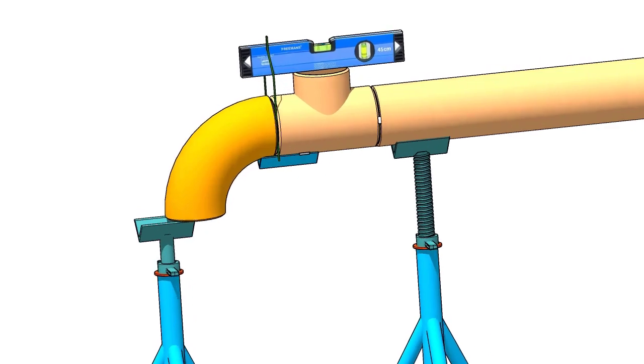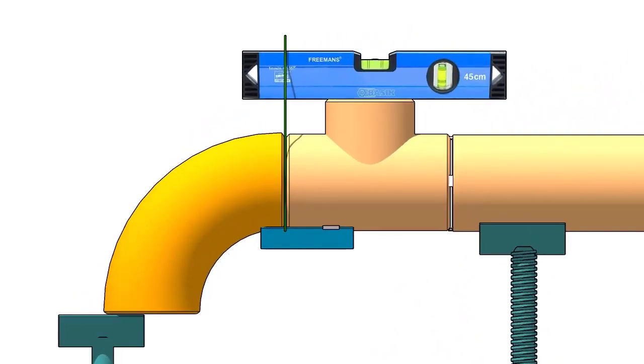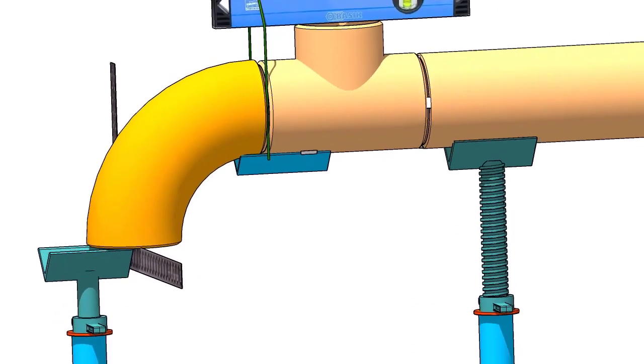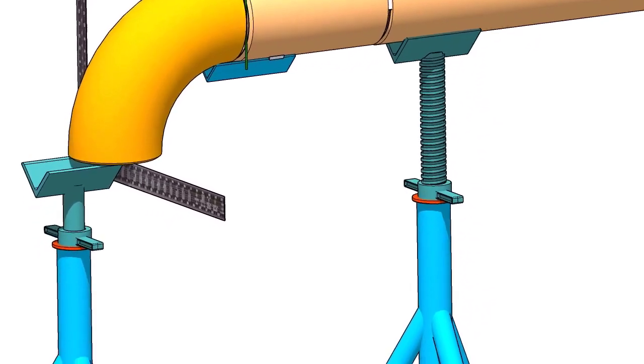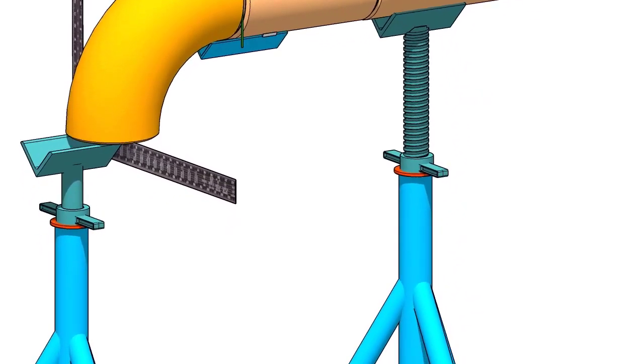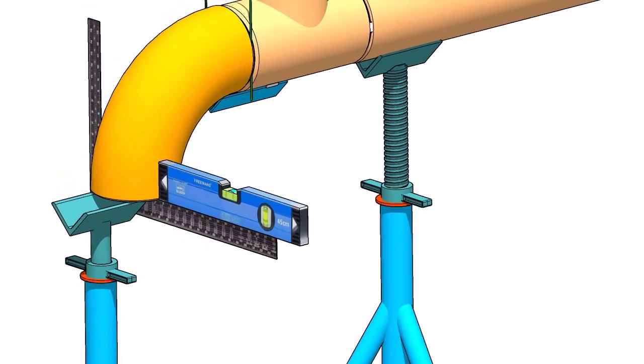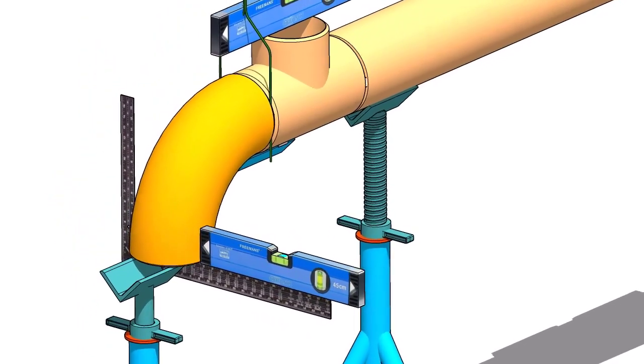Hold a large right angle or a straight edge below the elbow face firmly. Put a level bottle on the right angle as shown. Rotate the elbow to make the face level. Tack weld on both sides of the elbow with the tee.